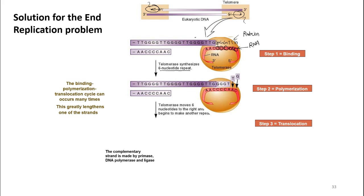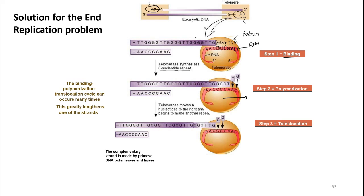The binding phase is followed by polymerization: once the first six-nucleotide repeat is added, sliding occurs in the 5'-to-3' direction, and six more nucleotides of the same GGGTTG sequence are added. This polymerization continues, adding as many repeats as needed. Earlier the DNA structure ended at a certain point, but now the 3' end is being extended, and by doing so we can add a new primer to the newly synthesizing strand.